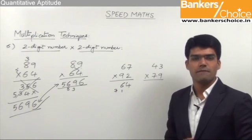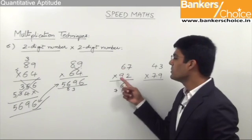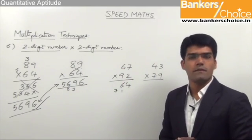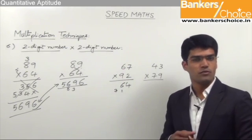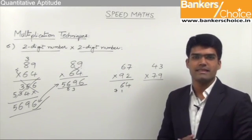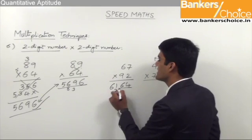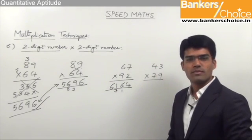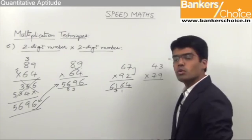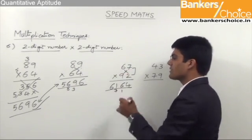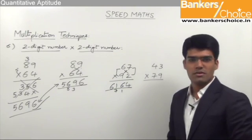The last and final step is multiplication of 10 spaces — that is 6 into 9, which is 54. And 7 is the carry. 54 plus 7 is 61. So the answer here is 6164. The first step is multiplication of unit spaces, the second step is cross multiplication, and the third step is multiplication of 10 spaces.